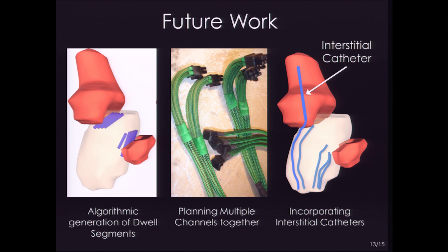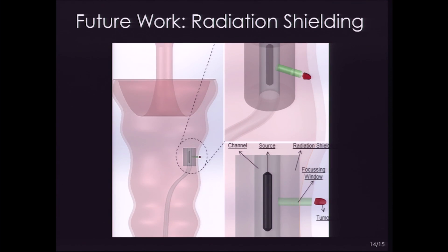Some of the things I have been working on right now include better dose planning algorithms and channel planning algorithms. Using these 3D printed implants not only for intracavitary brachytherapy but also as needle guides for treating tumors that are deeply seated. And finally, one of the more exciting things is using these implants with multi-material printers to directly print radiation shielding material into the implant, which would allow us to shape the dose distribution even better and avoid side effects related to radiation therapy.